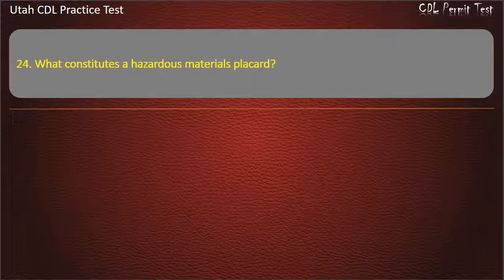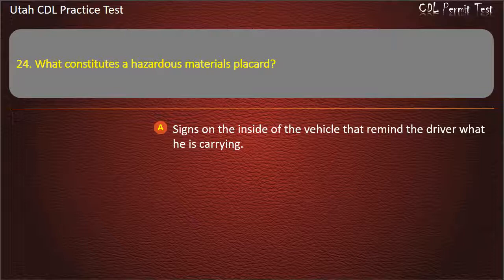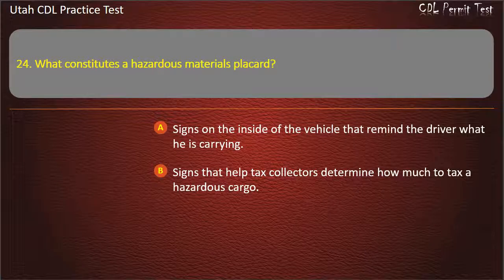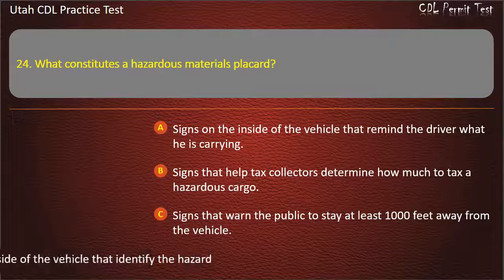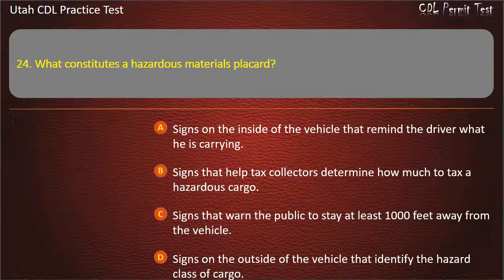Question 24. What constitutes a hazardous materials placard? Signs on the inside of the vehicle that remind the driver what he is carrying. Signs that help tax collectors determine how much to tax a hazardous cargo. Signs that warn the public to stay at least 1,000 feet away from the vehicle. Signs on the outside of the vehicle that identify the hazard class of cargo. Answer: Signs on the outside of the vehicle that identify the hazard class of cargo.